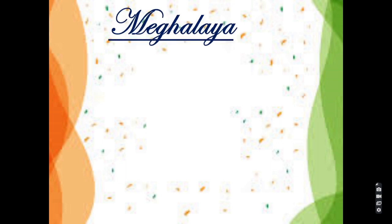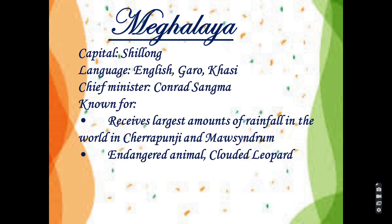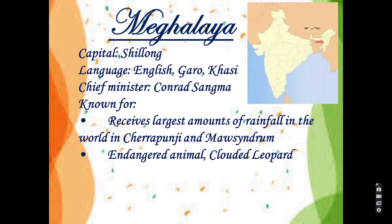Next state is Meghalaya. Meghalaya was formed by carving out two districts from the state of Assam: the United Khasi Hills, Jaintia Hills and the Garo Hills. Meghalaya was previously part of Assam, but on 21st January 1972, the districts of Khasi, Garo and Jaintia Hills became the new state of Meghalaya.